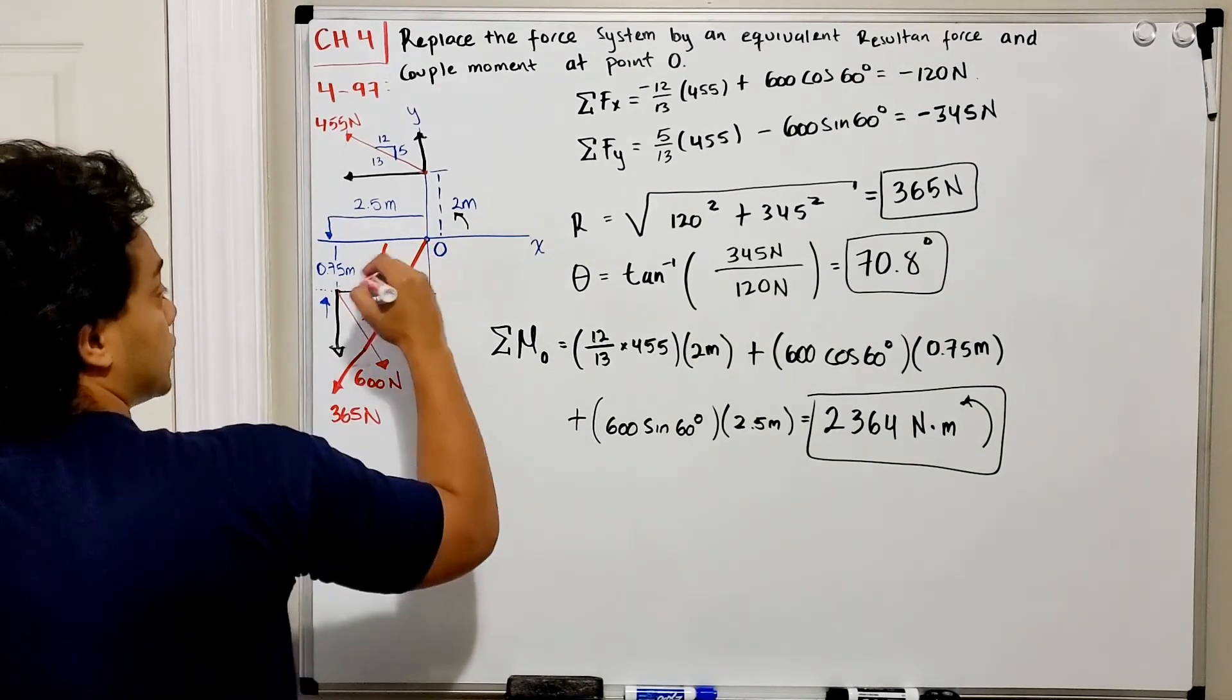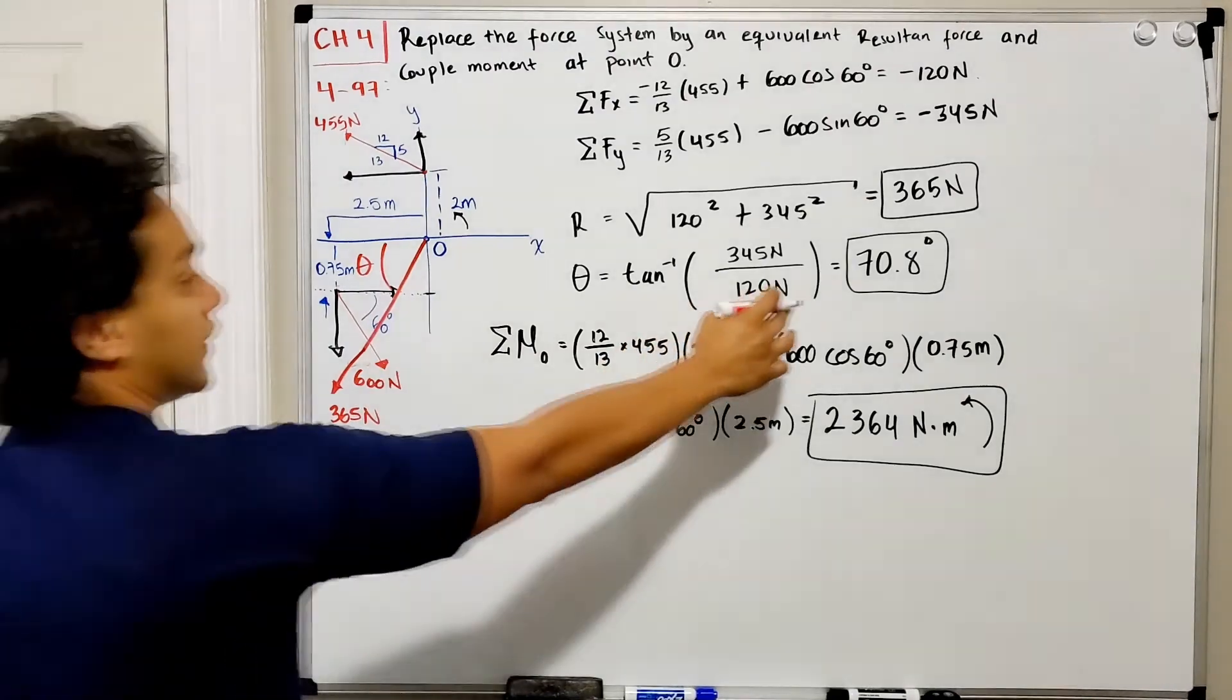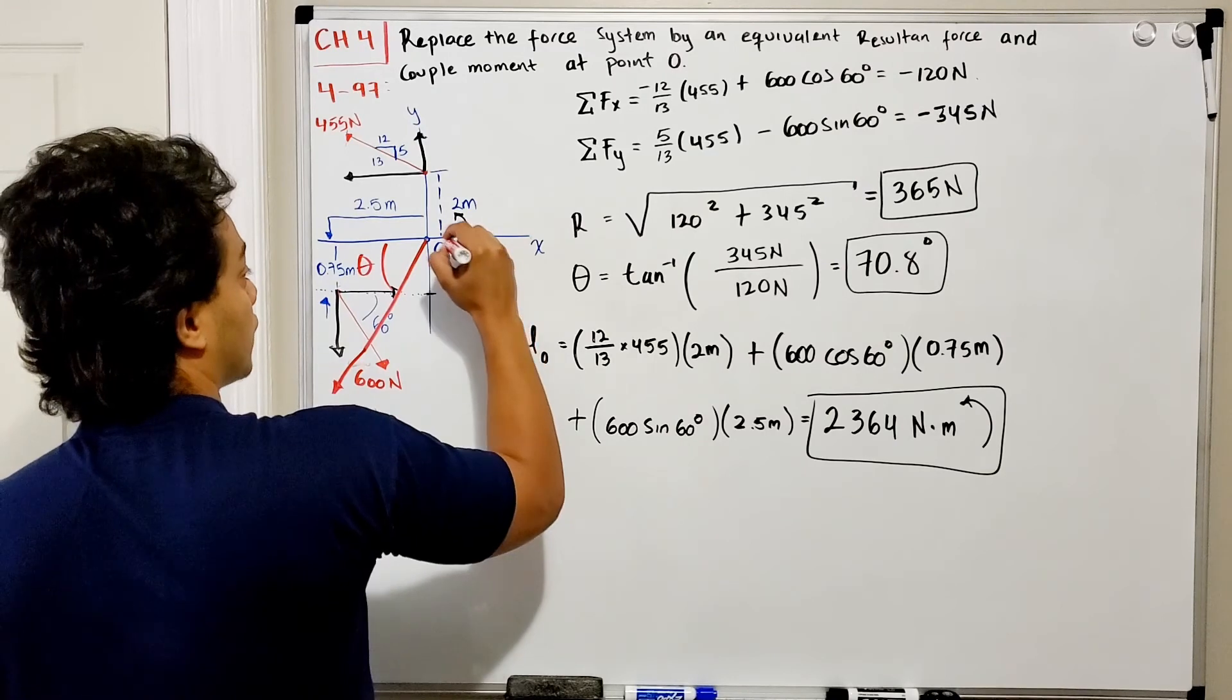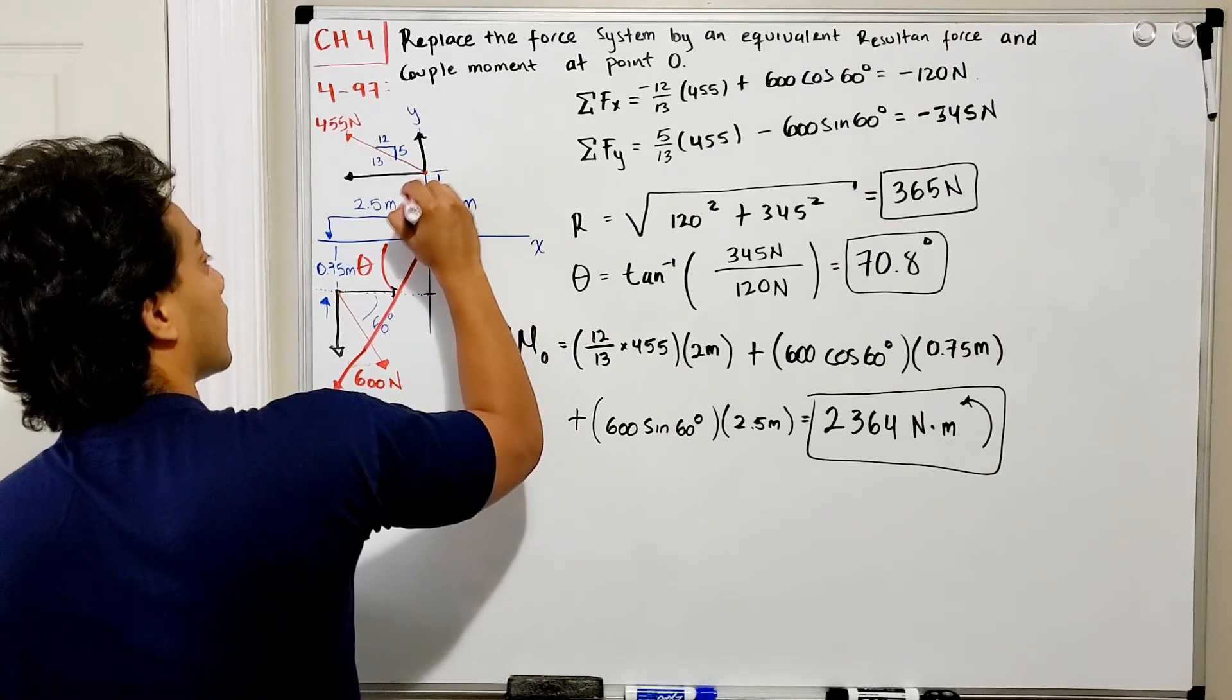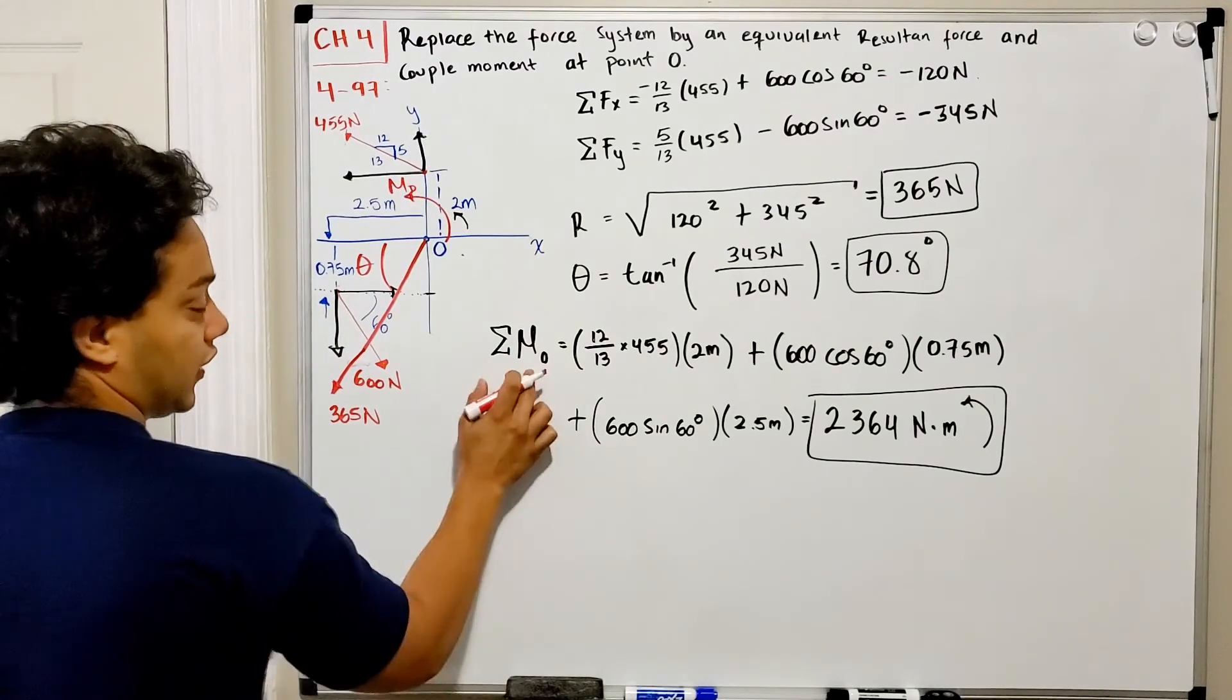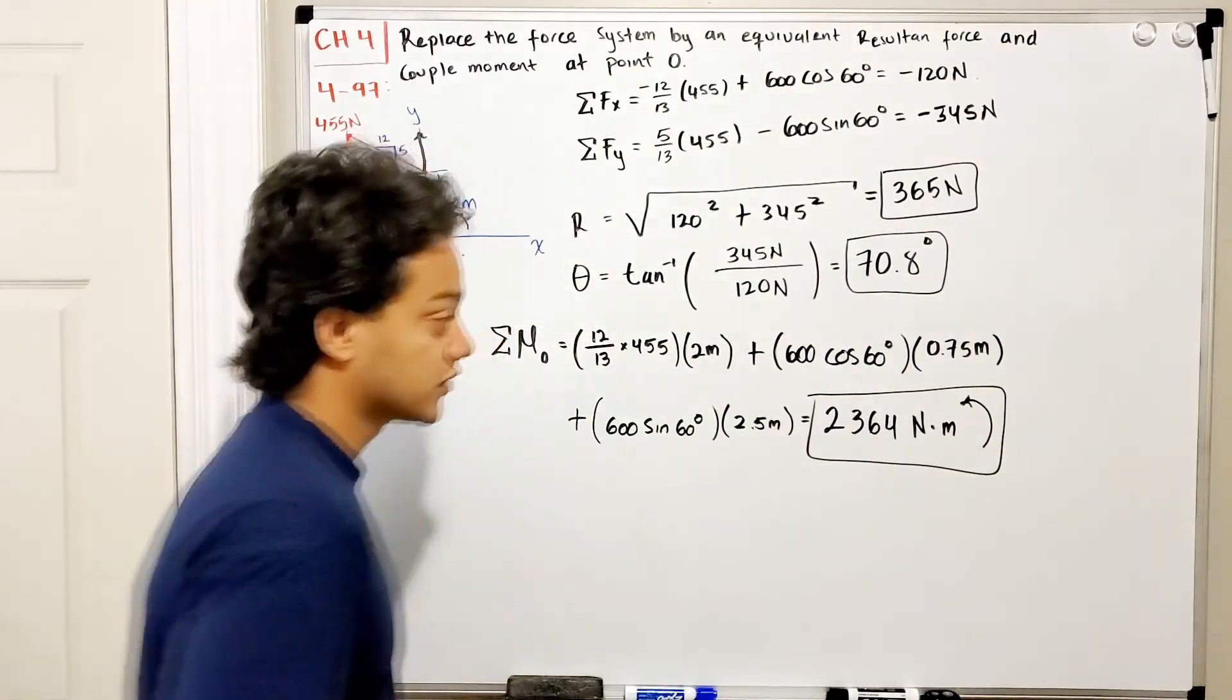The angle between here is theta, 70.8 degrees. We also have a moment around point O with a moment of 2,364.